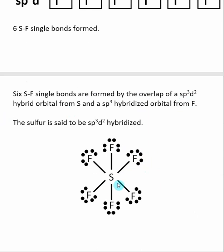When we look at the Lewis structure for SF6, we see that sulfur does indeed have 6 bonds to it, and this central sulfur is said to be sp3d2 hybridized.